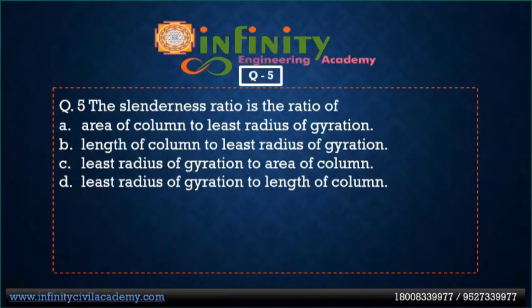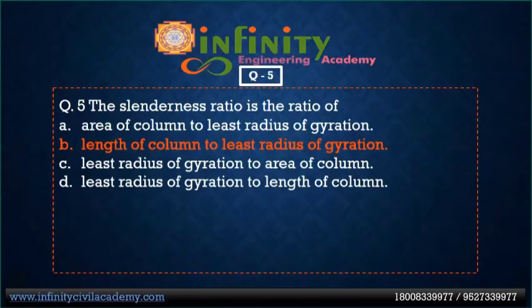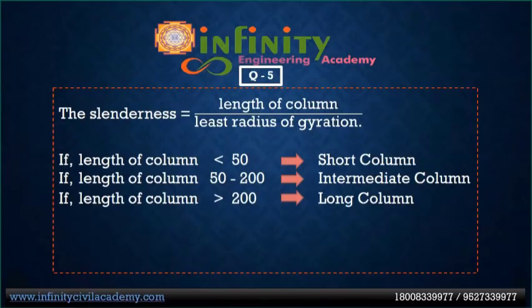Question 5: The slenderness ratio is the ratio of — option A: area of column to least radius of gyration, option B: length of column to least radius of gyration, option C: least radius of gyration to area of column, option D: least radius of gyration to length of column. Option B is correct. The slenderness ratio is the ratio of the length of the column to the least radius of gyration.